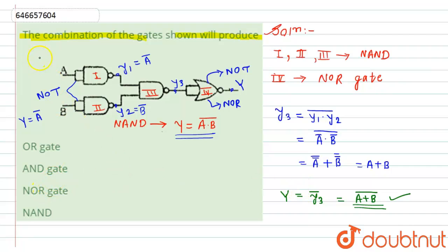The given combination of gates produces a NOR gate. Looking at the options, option C — NOR gate — is the correct answer. This is the required solution.